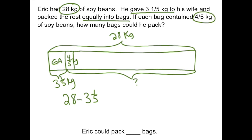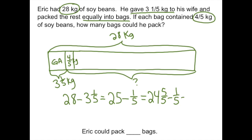To solve this, we first take away the whole numbers: 28 minus 3 is 25. Now we need to take away one-fifth, so we're going to borrow one whole and illustrate it as a fraction. That's the same as 24 and five-fifths minus one-fifth, which equals 24 and four-fifths. So we can fill that in: 24 and four-fifths kilograms remain.